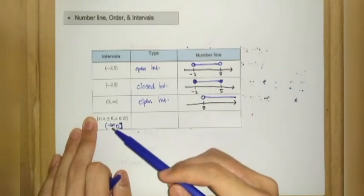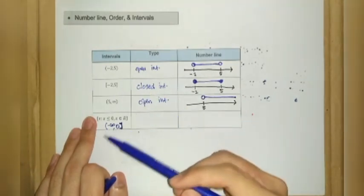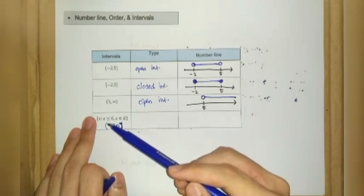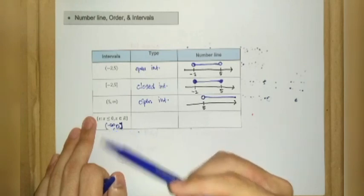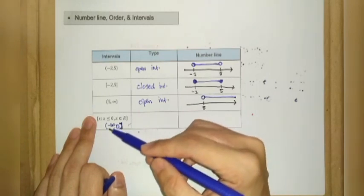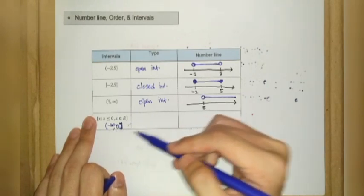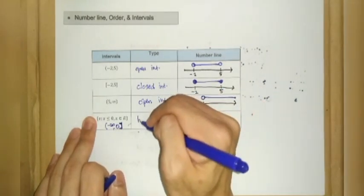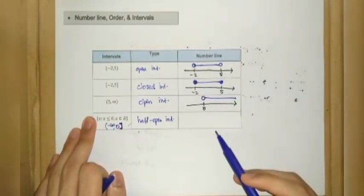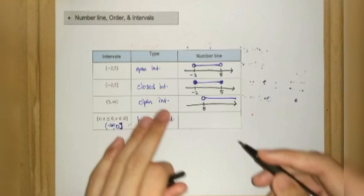For infinity, since it is just a concept of big numbers and we don't have an exact value, we always denote it with a curve bracket. So we have a combination of a box bracket and a curve bracket — this makes it a half-open interval.